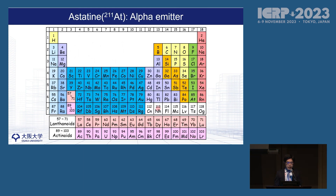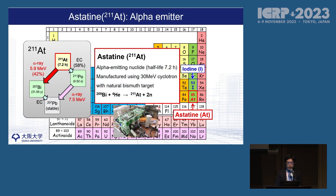Astatine has some issue for global supply because its production is still limited in the world. So we are focusing on Astatine-211. It is an alpha emitter with a relatively short half-life of 7.2 hours. The advantage of Astatine-211 is that we can produce it using an accelerator with a natural bismuth target, meaning we don't need any special radioactive material. If we can set up a cyclotron base in a country, we can perform domestic production of this alpha emitter. The decay pathway is very simple — it emits alpha, and the daughter nuclide, polonium-211, also emits X-ray, so we can image the distribution in a patient.